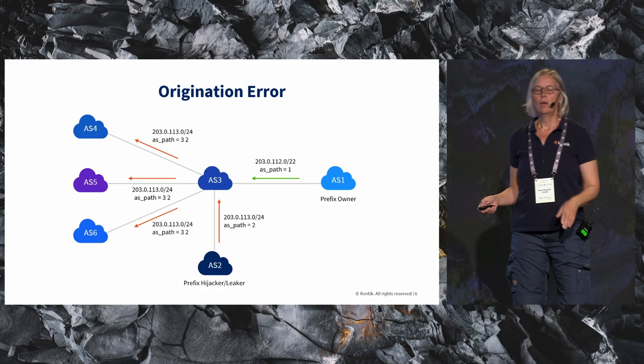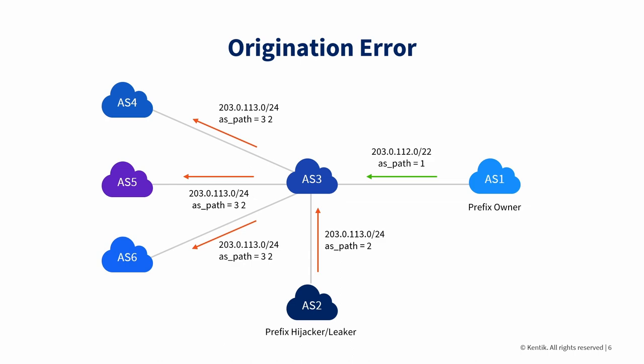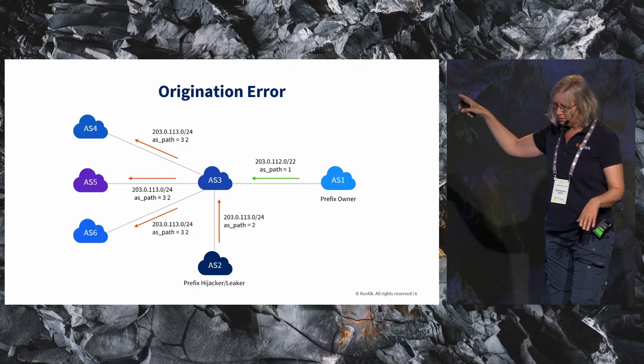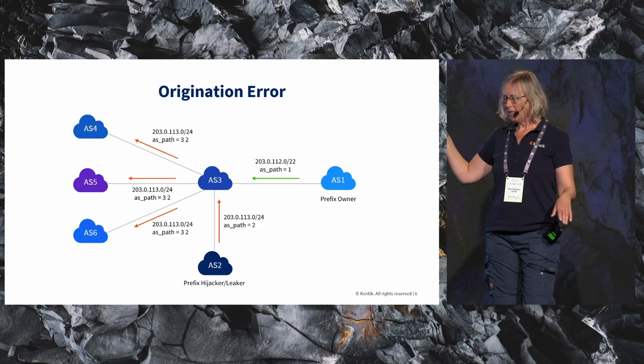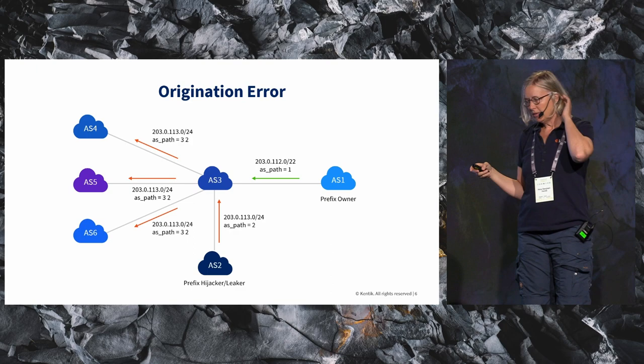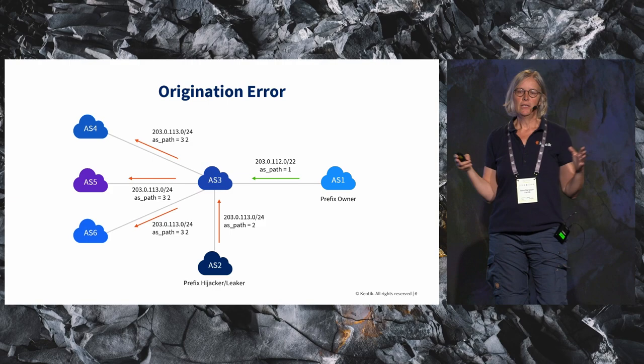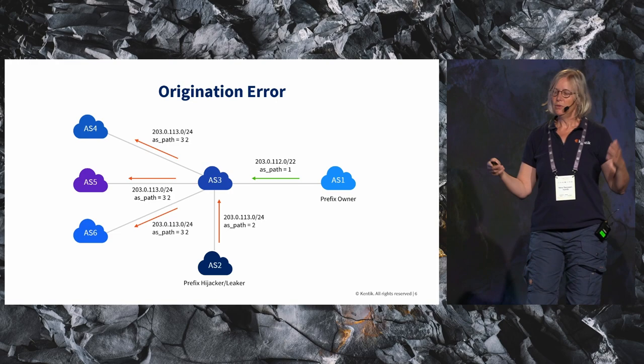I realize there are a lot of people in the room who will know all of this, but just for clarity's sake, let's talk about what we mean. Here is the origination error. You have AS1 that owns the prefix — it's a slash 22. It's sent on to AS3. But AS2 is announcing a slash 24 from the same space. And the traffic, due to how BGP works, will then go to AS2 for all the IP addresses in that space, if we did not have any protection going on.